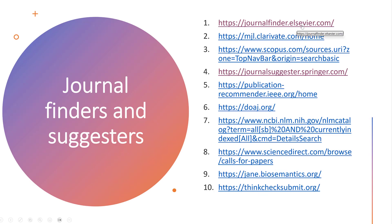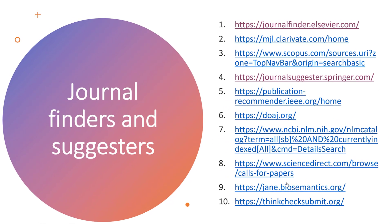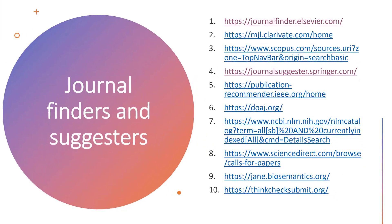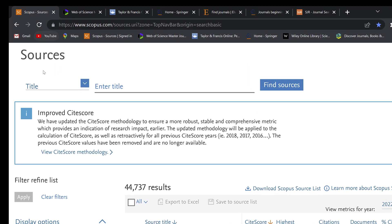There are several journal finder tools available. We have the Journal Finder by Elsevier, the Master Journal List by Clarivate Analytics which is affiliated with Web of Science, and the Scopus journal search tool, along with different recommendation websites. Let's go to the Scopus database.